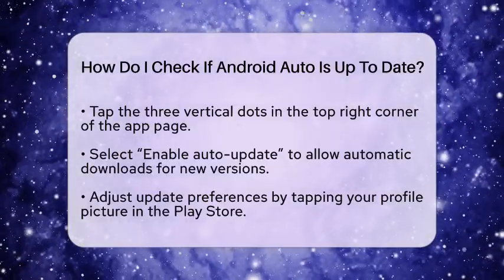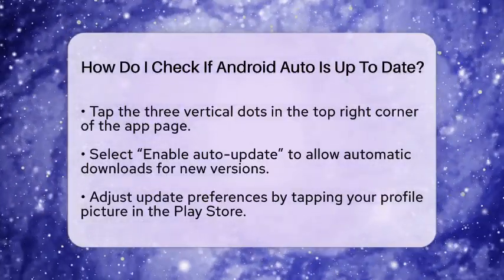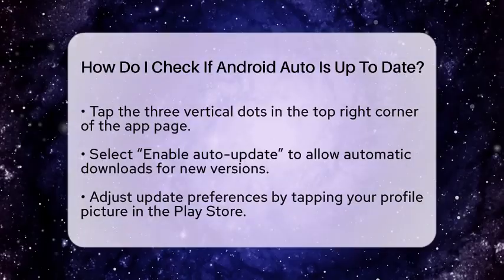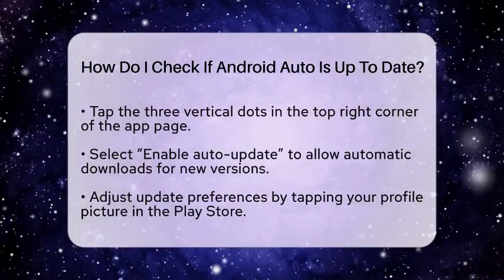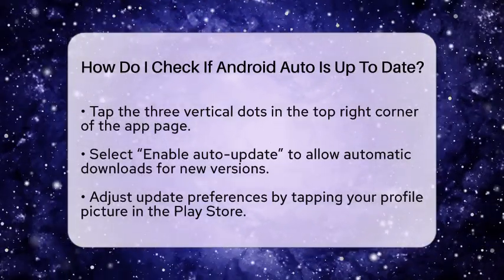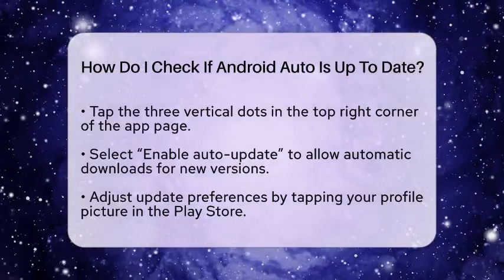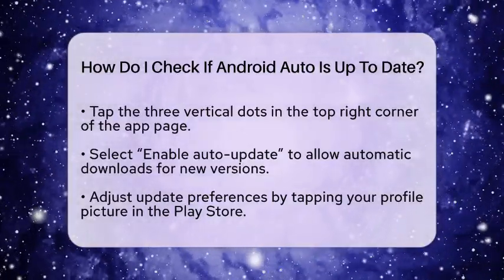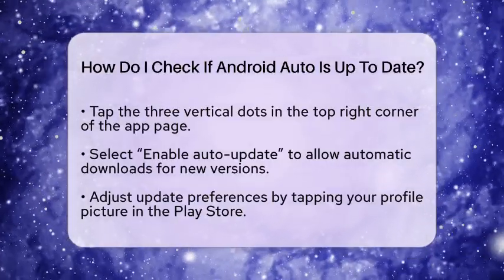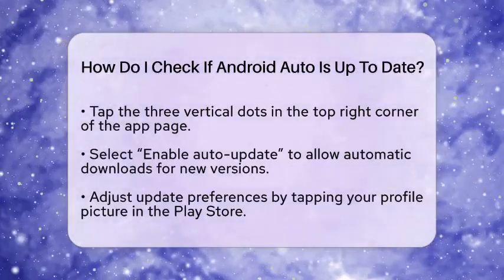By doing this, your device will automatically download and install any new versions of Android Auto as they become available. If you prefer to manage how your applications update, you can adjust your update preferences. To do this, go back to the Google Play Store and tap your profile picture in the top right corner. Then select Settings, followed by Network Preferences, and finally Auto Update Apps.